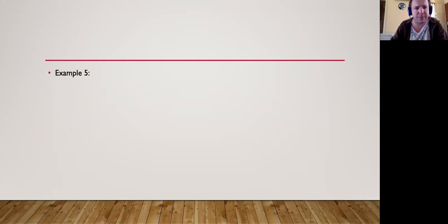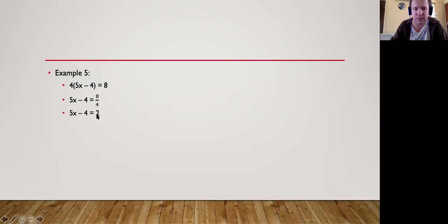Example 5, last example for today: 4 times brackets 5x minus 4 is equal to 8. Divide both sides by 4: 5x minus 4 equals 2. Move the 4 over — it becomes plus 4 — so 5x equals 2 plus 4 which is 6. Then divide both sides by 5: x equals 6 over 5, which is 1 and one-fifth.